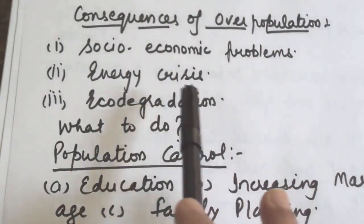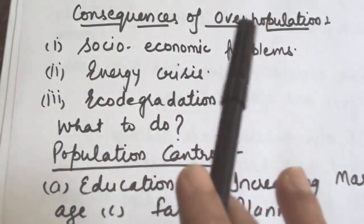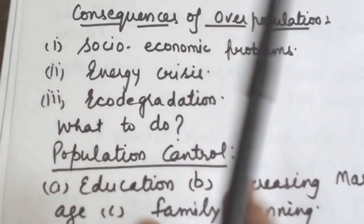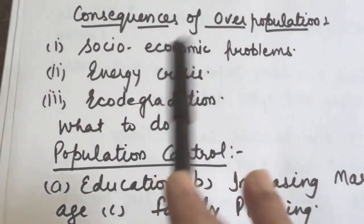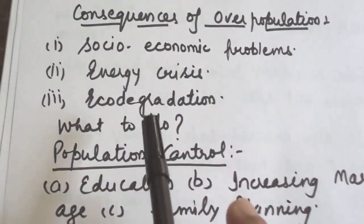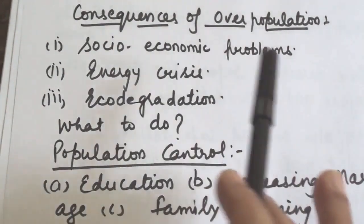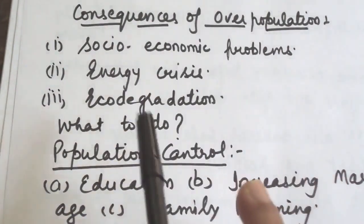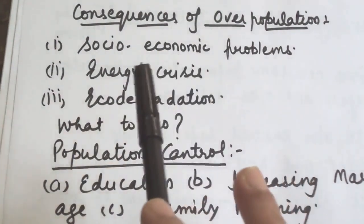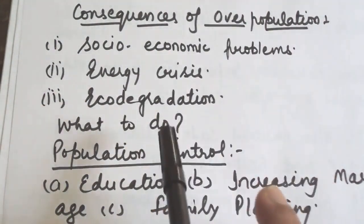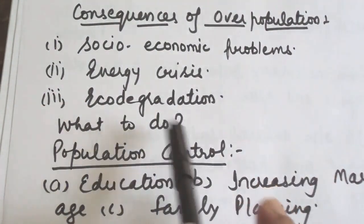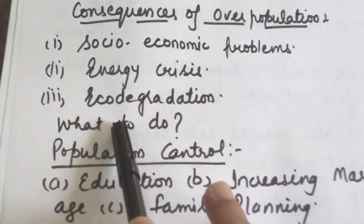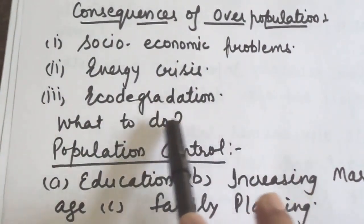It is difficult to maintain sanitation in congested areas such as slums. Because of large-scale deforestation, soil erosion has increased and floods and droughts have spoiled agricultural lands. These causes lead to eco-degradation, meaning degradation of the ecosystem.